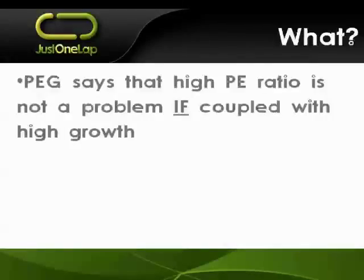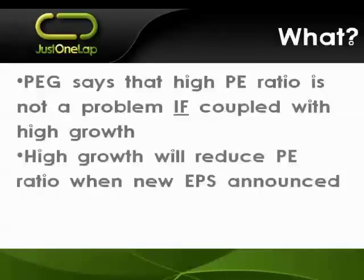So a PEG ratio says that a high PE is not a problem if coupled with high growth — and that 'if' is critically important. A high PE is only really comfortable if you're going to get high growth coming through at the same time. High growth will reduce that PE because that PE is price into earnings, and when that high growth comes in at year-end or mid-year numbers, it will constantly be pulling that PE down as earnings grow.